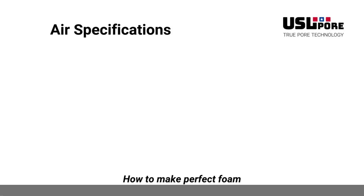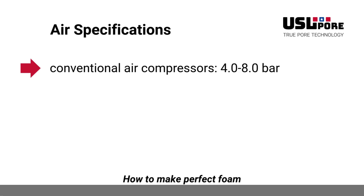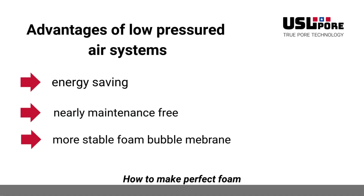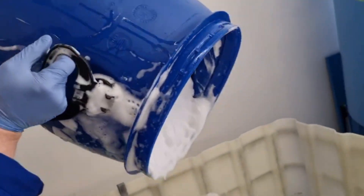Regarding air specifications: the air for foam generators is mostly produced by air compressors, with air pressure usually set between 4 and 8 bar. USL POUR foam generators are equipped with low-pressure air generators working with only 0.3 to 0.7 bar. This is energy-saving, reduces maintenance, and results in a much more stable foam membrane, as the foam membrane is generated in the foam nozzle in a very smooth way. In combination with USL POUR foaming agents, the foam stability while producing foam concrete is outstanding.